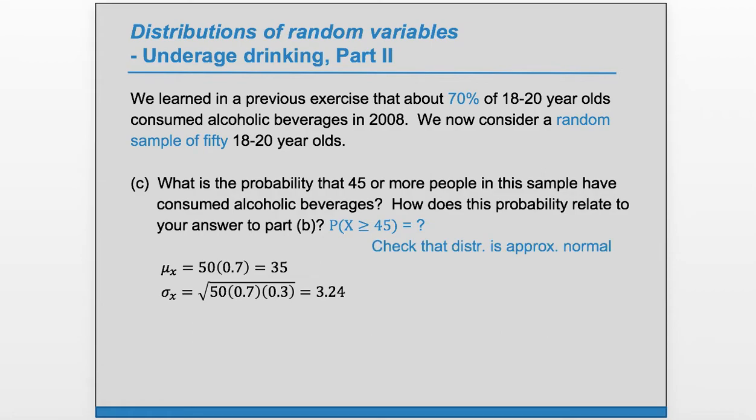So let's check this binomial distribution is approximately normal. We're going to need np and n(1 minus p) to be at least 10. We have np is 50 times 0.7, that is greater than or equal to 10, and n(1 minus p) is also greater than or equal to 10.